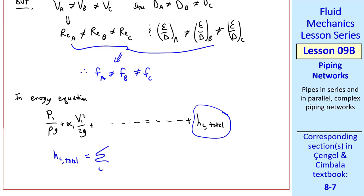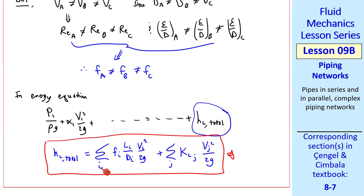Namely, HL total is summation over index I, FI, LI over DI, VI squared over 2G, plus sigma over index J, KL sub J, VJ squared over 2G, where index I is summed over the three sections in our example, A, B, and C, where these terms are all different for the three sections of pipe.